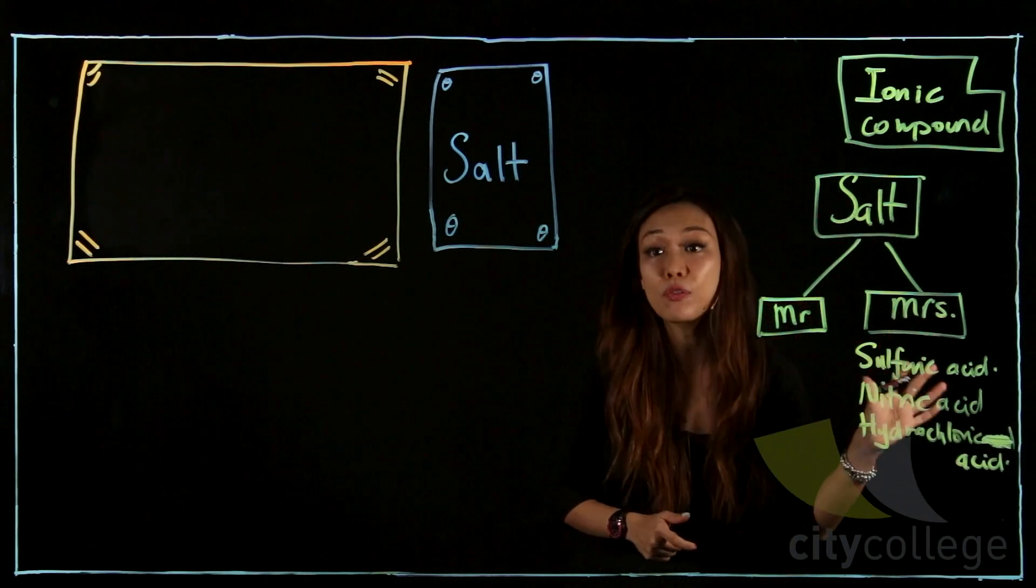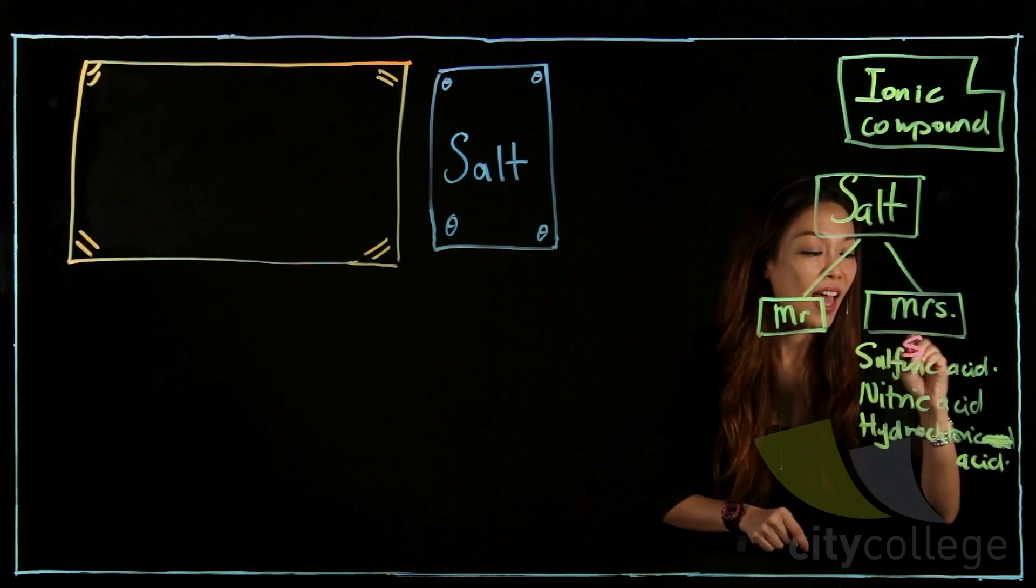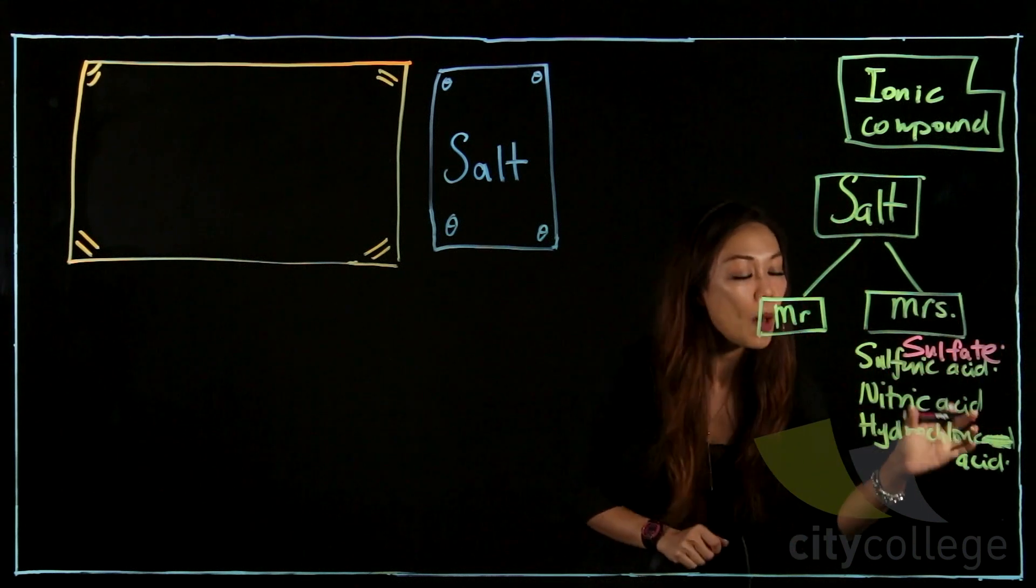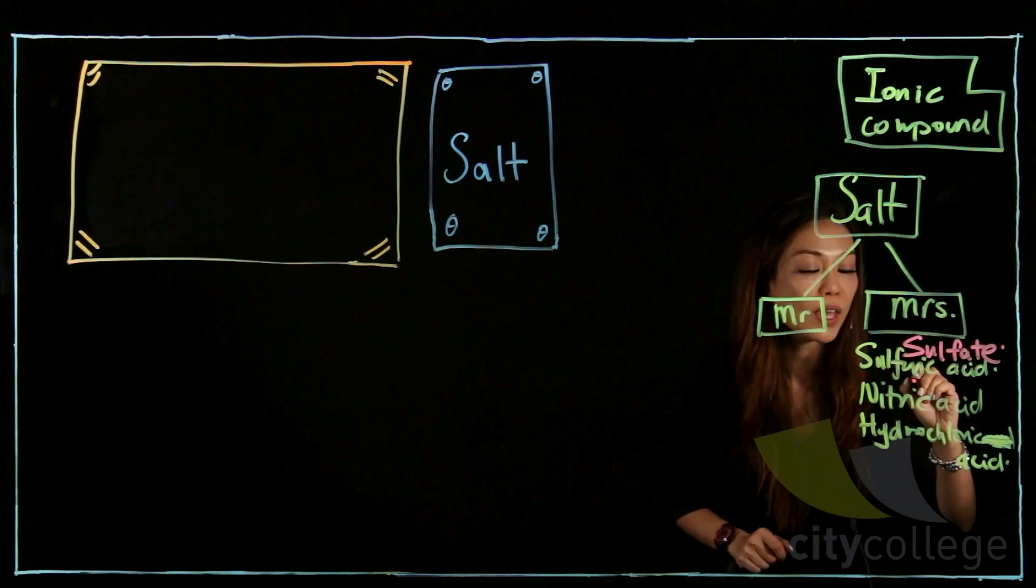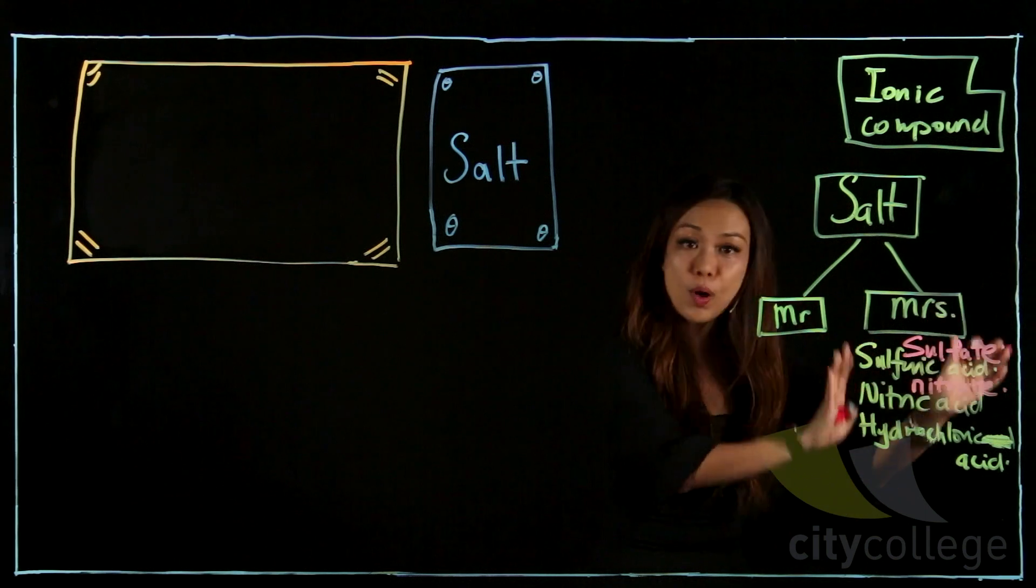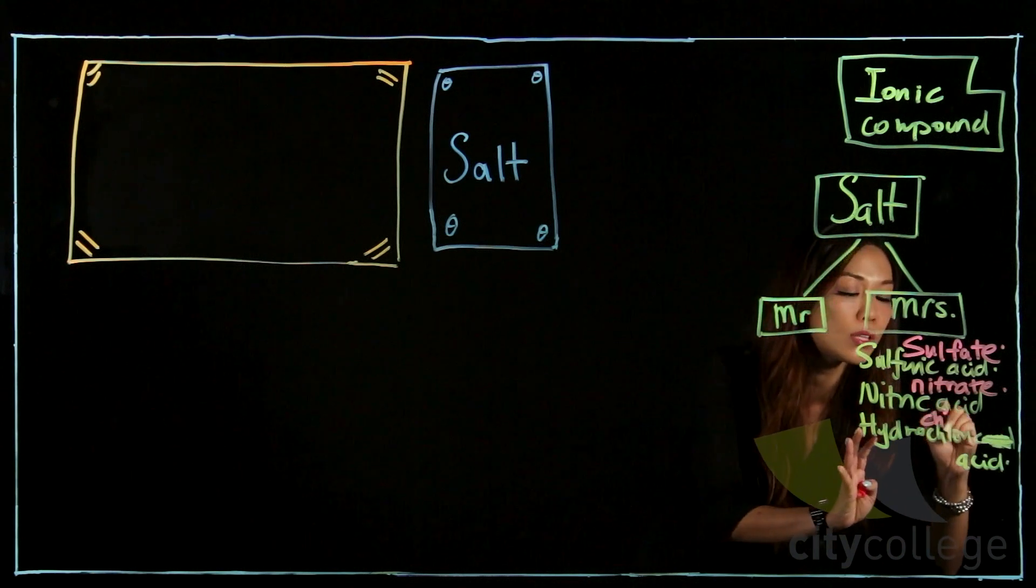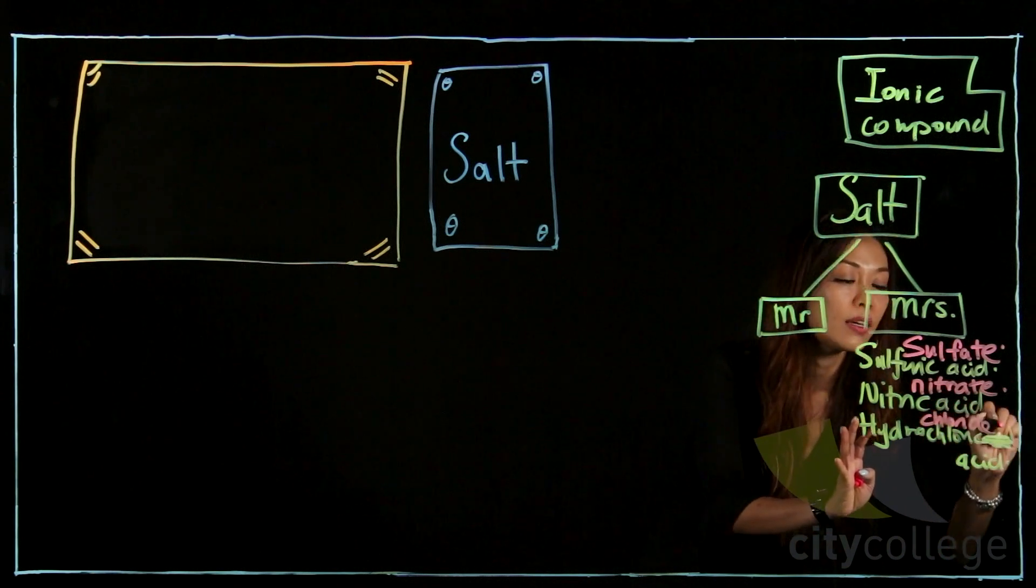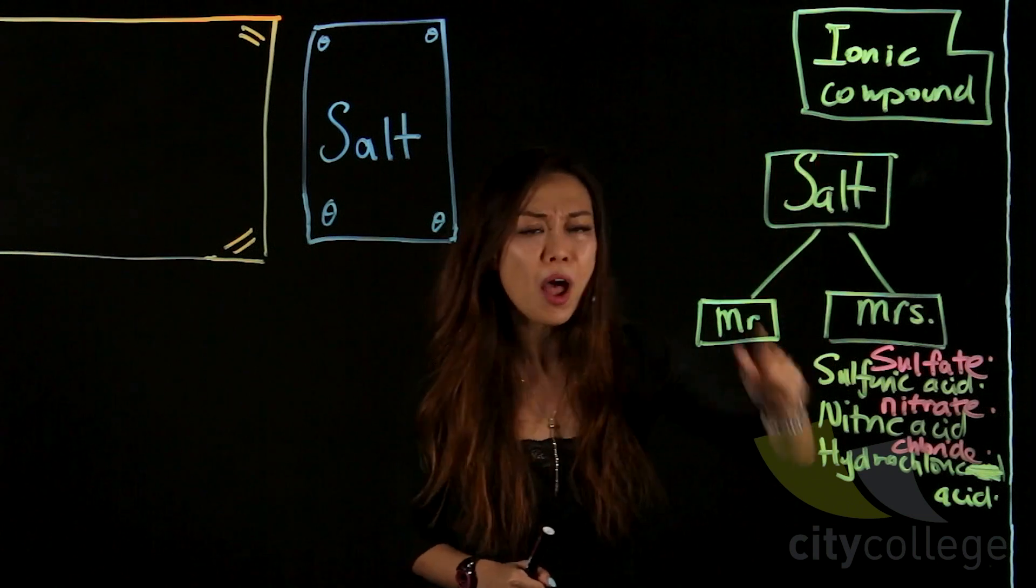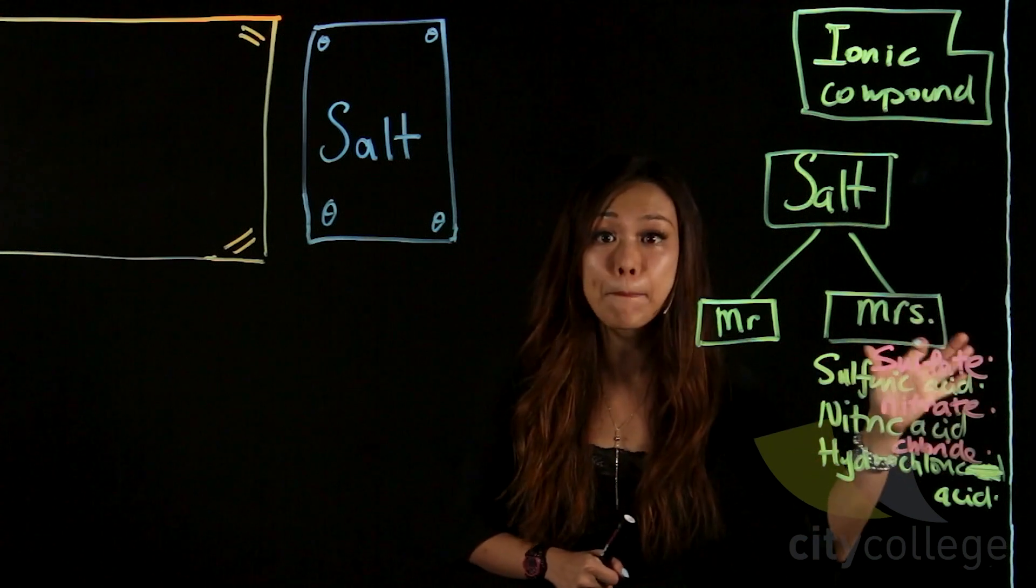So if you use sulfuric acid, what is the missus name? It should be S-U-L-F-A-T-E, sulfate. Now, then how about nitric acid? It should be N-I-T-R-A-T-E. So they will focus on this, and I'm sure you can see it now. Then how about hydrochloric acid? You will use this part called chloride. So every time when you want to formulate a salt from the acid, you can find the missus, which are all the pink ones.